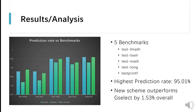However, the overall prediction rate of both G-select and the new scheme are still lower than that of the B-mode predictor — one of the two-level predictors — which has a higher branch prediction rate but also a higher memory overhead.